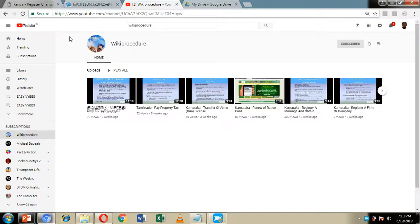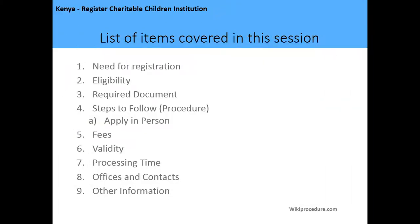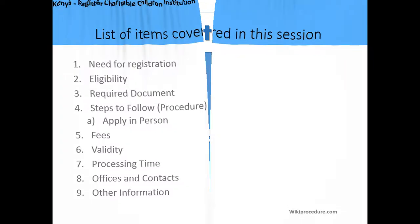Let's get back to our presentation. The list of items we're going to cover in this session includes: the need for registration of a charitable children's institution, the eligibility criteria, the required documents, steps to follow when making the application, the applicable fees, the validity period, processing time, office location and contact information, and any other relevant information on how to register a charitable children's institution in Kenya.